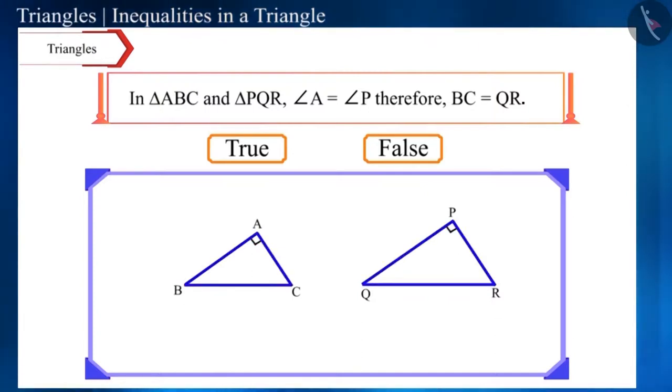Friends, if you look at these triangles, then the measurement of both angle A and angle P is 90 degrees. But, the length of their opposite sides, side BC and side QR, are not equal to each other.